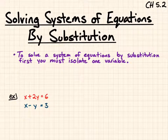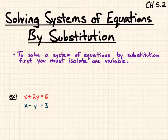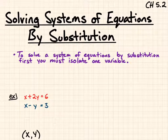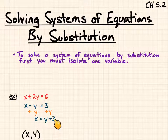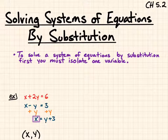We're going to first isolate one variable. I'm going to add y to both sides of the second equation to get x equals y plus 3. So I've isolated x here.